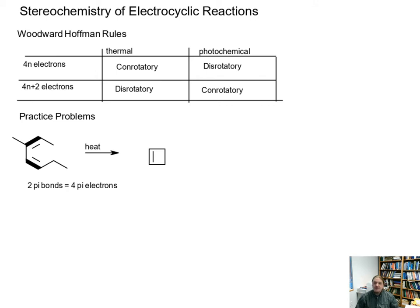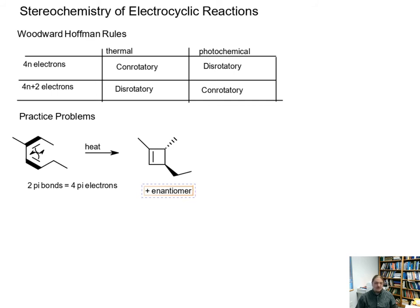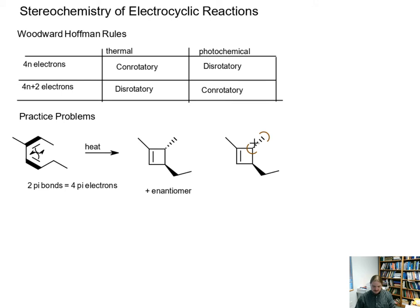The methyl group is going to rotate down, and the ethyl group then rotates up. This other methyl group on the other side of the molecule remains attached to the carbon atom it's attached to — that position is planar, so we don't represent any stereochemistry there. We draw the mechanism — it's a pericyclic reaction, so the mechanism is pretty simple. Because the reactant is achiral, this is also going to form the other enantiomer if the rotation happens in the opposite direction. You get the other enantiomer when the groups rotate in the opposite direction.